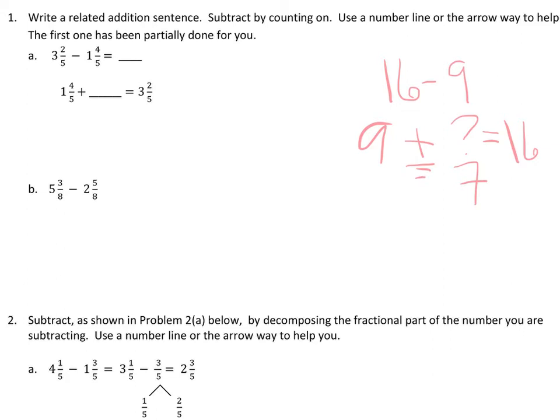So, I have this strategy on number 1, A and B. They would like you to do the same thing. So the problem is 3 and 2 fifths minus 1 and 4 fifths. But what this is, really, is the difference between these two is the same as starting with 1 and 4 fifths and adding how many more get you to 3 and 2 fifths. This is a good strategy to use. Now, I'm going to go ahead and do, it says use the number line or arrow way. I'm going to go ahead and draw the number line here for you so you can look at how I would work this out.